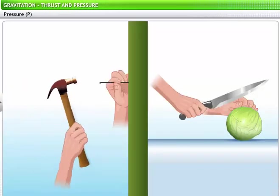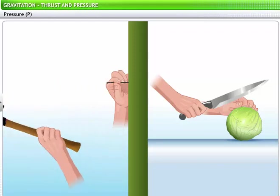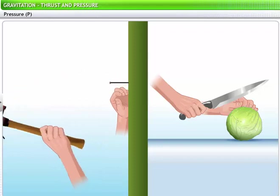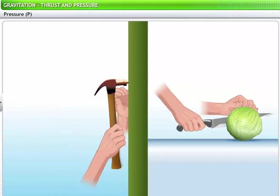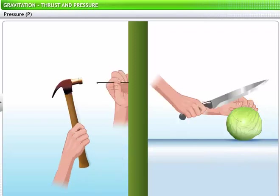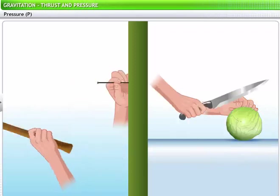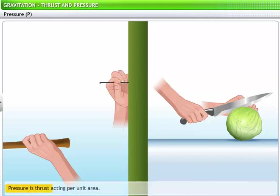We have seen that nails have pointed tips to help us drive them into surfaces. Why is it important for a nail to have a pointed tip? For that matter, why is it important to have a sharp knife to chop vegetables? The force you apply in driving a nail or chopping vegetables is translated into pressure, depending upon the surface area of the object on which the force is applied. In other words, pressure is the amount of thrust acting on a unit area.